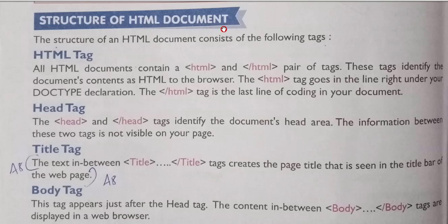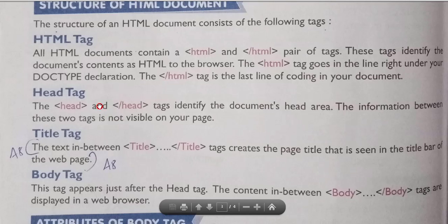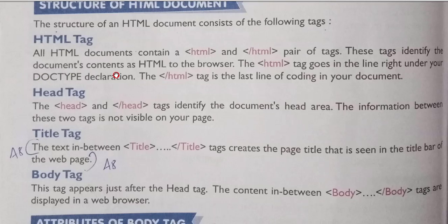Now, the structure of an HTML document consists of four main tags: html, head, title, and body. All your work will be done between or using these tags. First, the html tag: all HTML documents contain an opening and closing html tag pair. These tags identify the document's contents as HTML to the browser. If you apply the html tag, only then will your browser read it as an HTML document; otherwise it will be treated as a simple text document. The html closing tag is the last line of coding in your document.